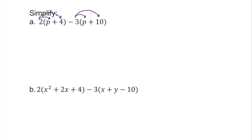So 2 times p is 2p, plus 2 times 4 which is 8, minus 3 times p which is 3p. Remember, it's very important we understand that there is an invisible 1 here — so 3 times 1 is 3, and 2 times 1 is 2.